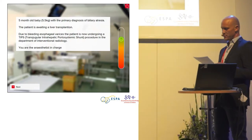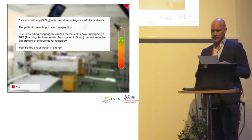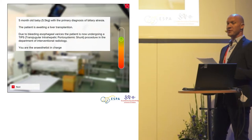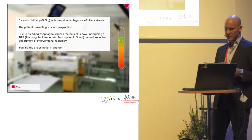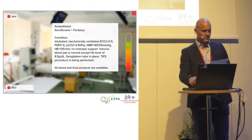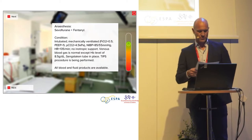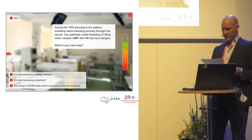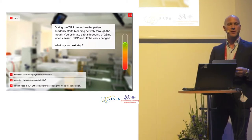At the end of the transfusion and coagulation module, the participant is presented with a case scenario meant to integrate knowledge obtained throughout the entire course. This exact case is about a five-month-old, 5.5-kilo baby with a primary diagnosis of biliary atresia. The patient is awaiting a liver transplantation and is currently undergoing a transjugular intrahepatic portosystemic shunt procedure, also known as the TIPS procedure. The next slide provides anesthesia and paraclinical data to form the basis for future decisions. The course participant is now faced with a relevant dilemma — the patient starts bleeding actively through the mouth, and decisions regarding coagulation management and transfusion strategy have to be made.